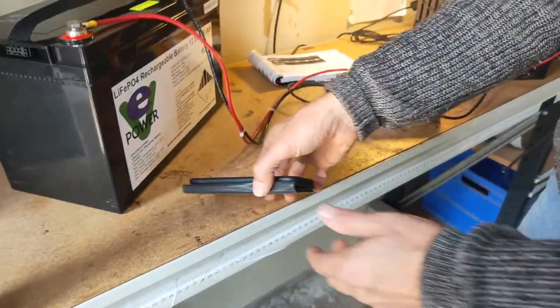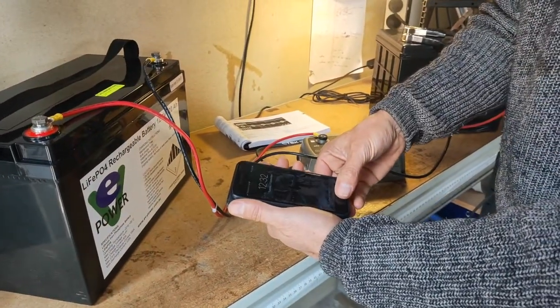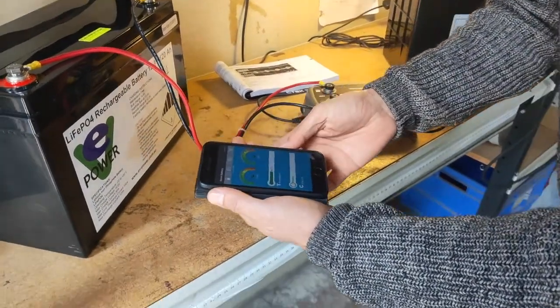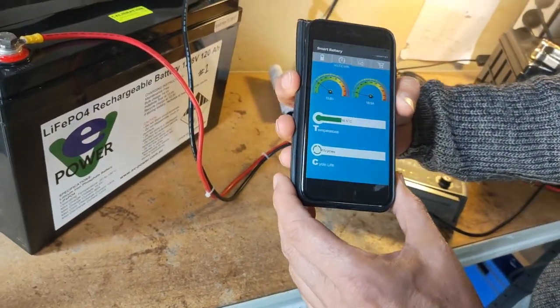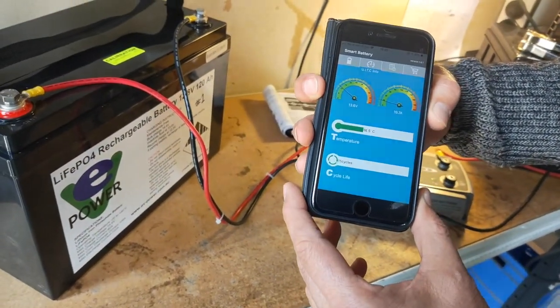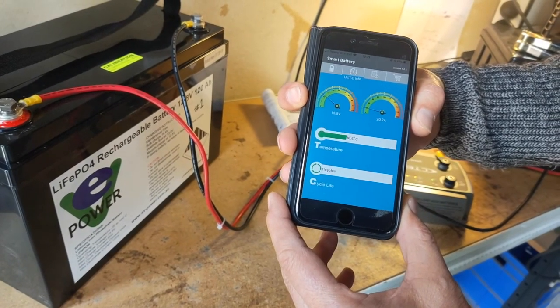So it's probably starting to ramp up a bit of charge into our battery. Let's check on our app here. There we go, that's starting to charge. Can you see that? Yep. That's charging at 20 amps at the minute.